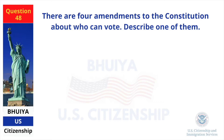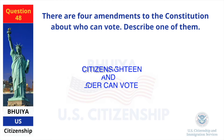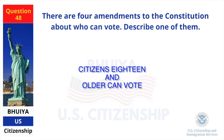There are four amendments to the constitution about who can vote. Describe one of them. Citizens 18 and older can vote.